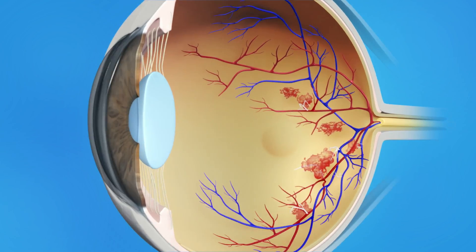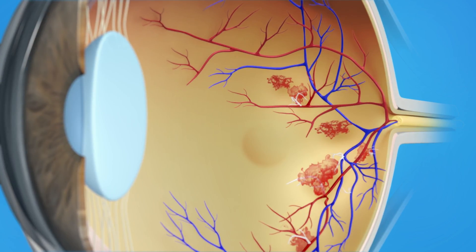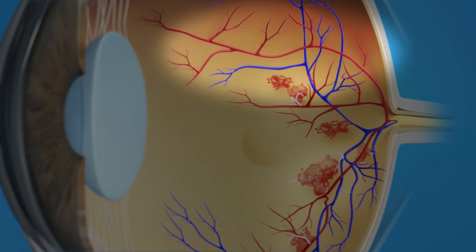Proliferative diabetic retinopathy, or PDR, is a stage of diabetic eye disease where abnormal blood vessels begin to grow on the surface of the retina. This is called neovascularization. With PDR, many blood vessels in the retina close off, keeping blood from flowing properly to the retina. The retina responds to this problem by trying to grow new blood vessels.